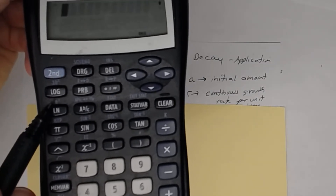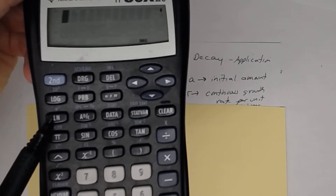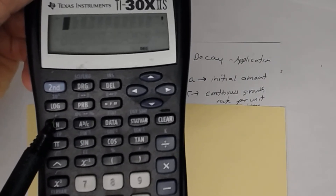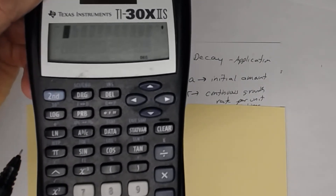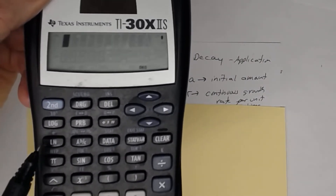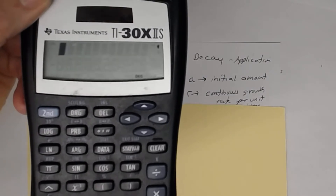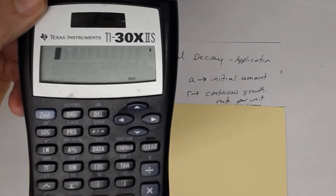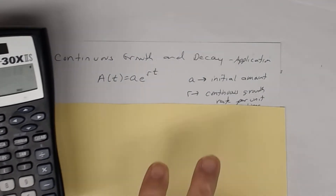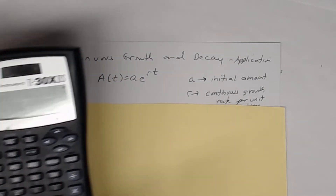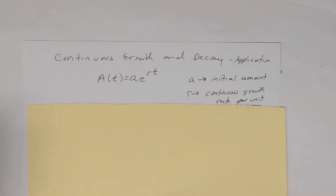On your calculator, right above the LN button is the e-to-the-x button. Make sure you know how to get to it because that's going to be important when doing these problems. Know how to use your calculator for these problems.